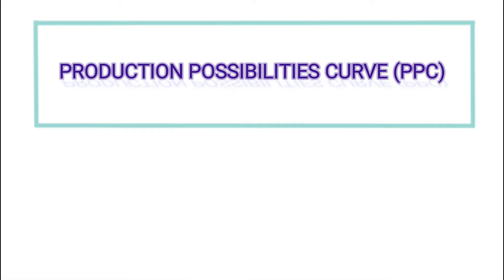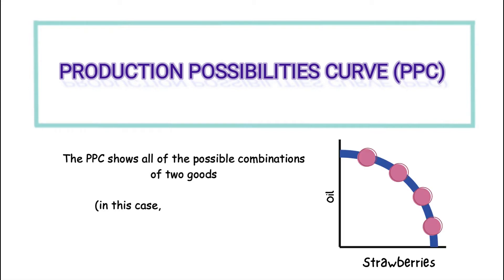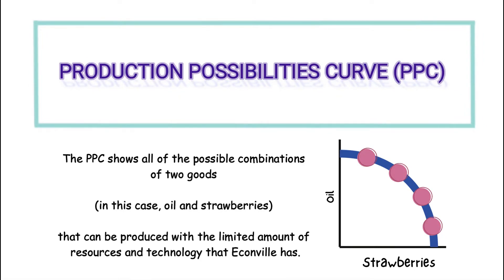The PPC shows all of the possible combinations of two goods, in this case oil and strawberries, that can be produced with the limited amount of resources and technology that Econville has.